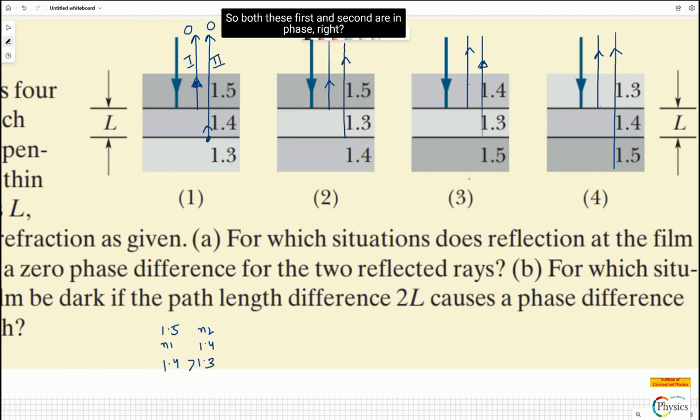So both these first and second are in phase. So there is no phase difference which is introduced between first and second reflected rays, also called as emergent rays. So if you look into the zero phase difference situation, this is correct.